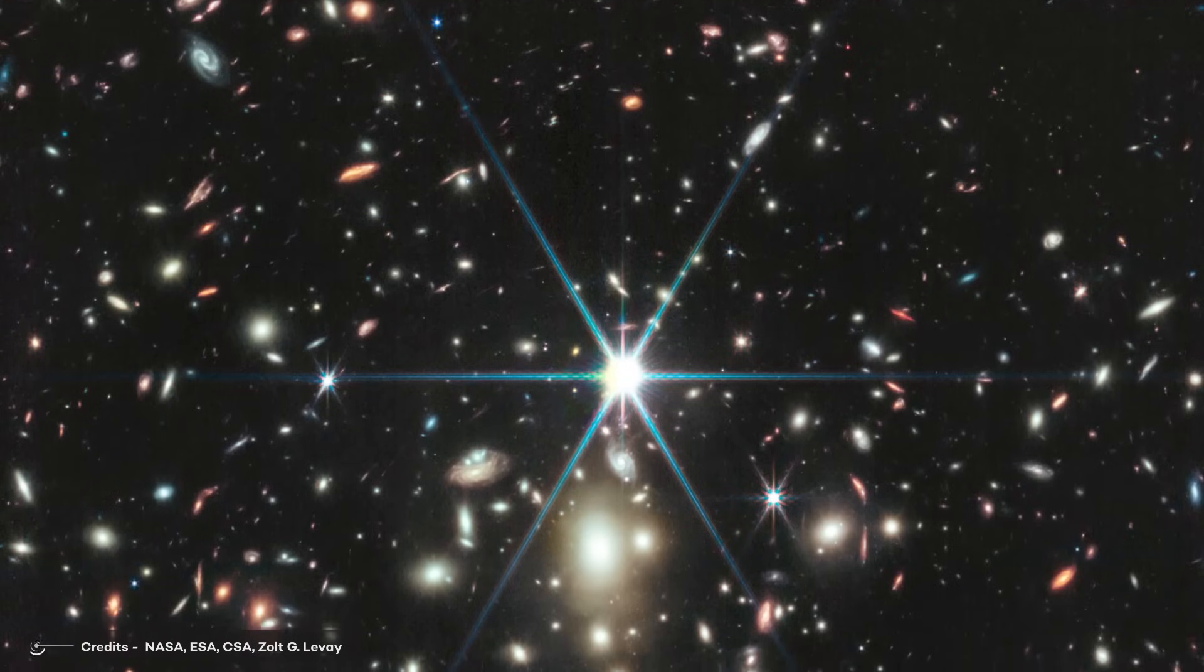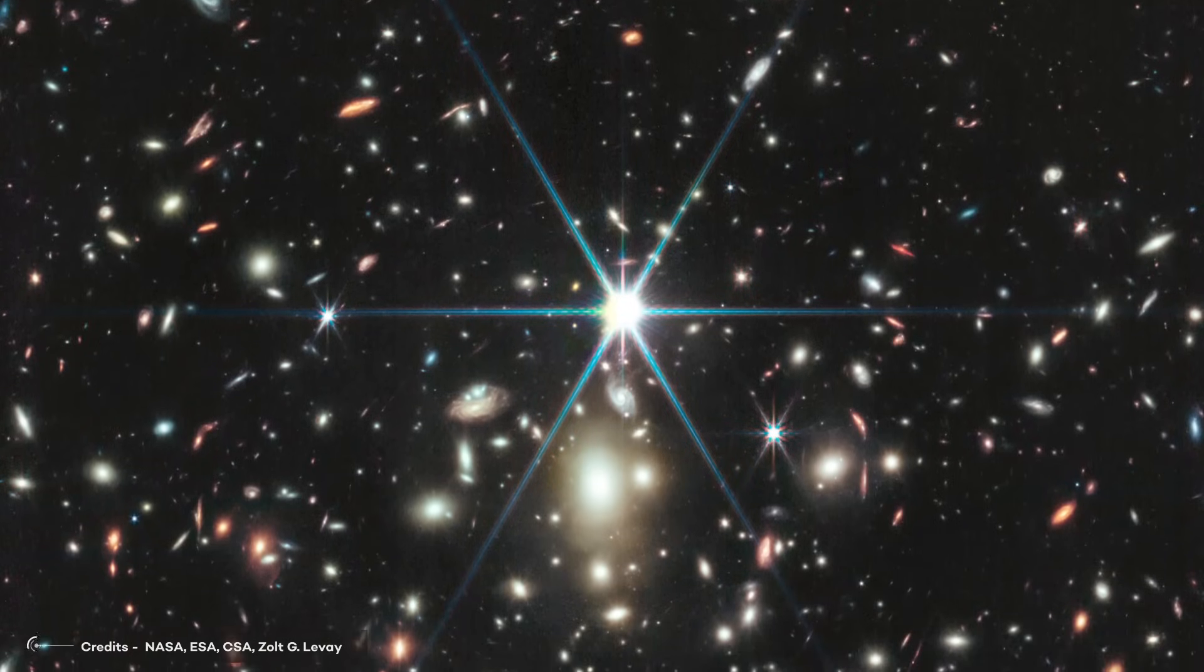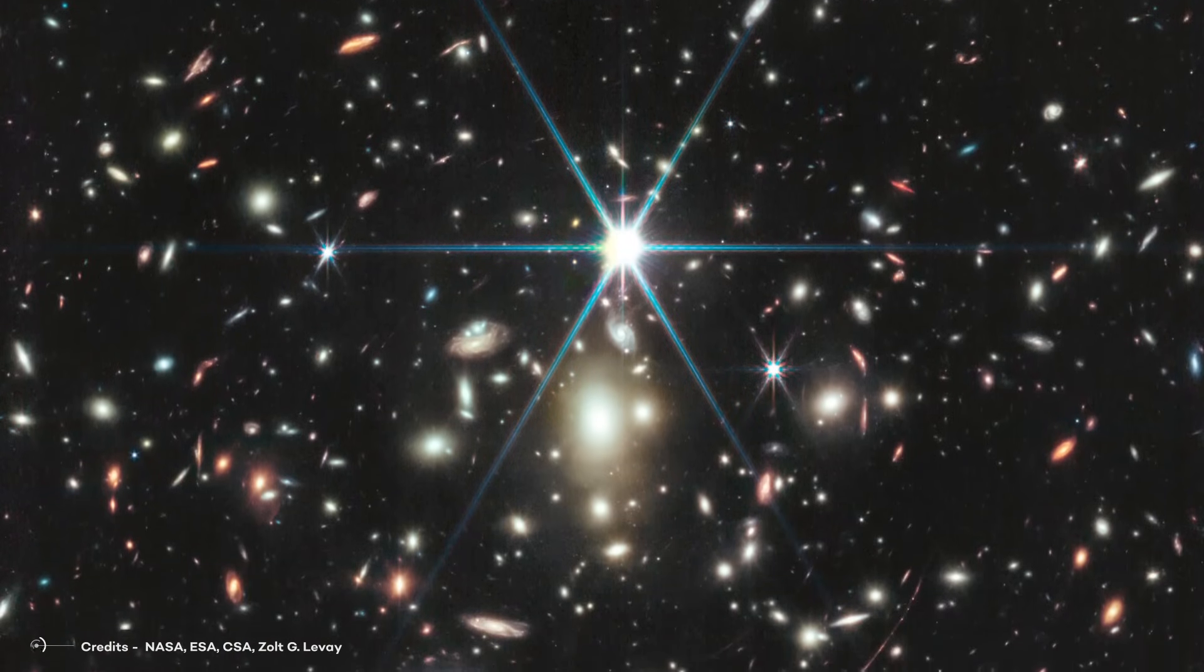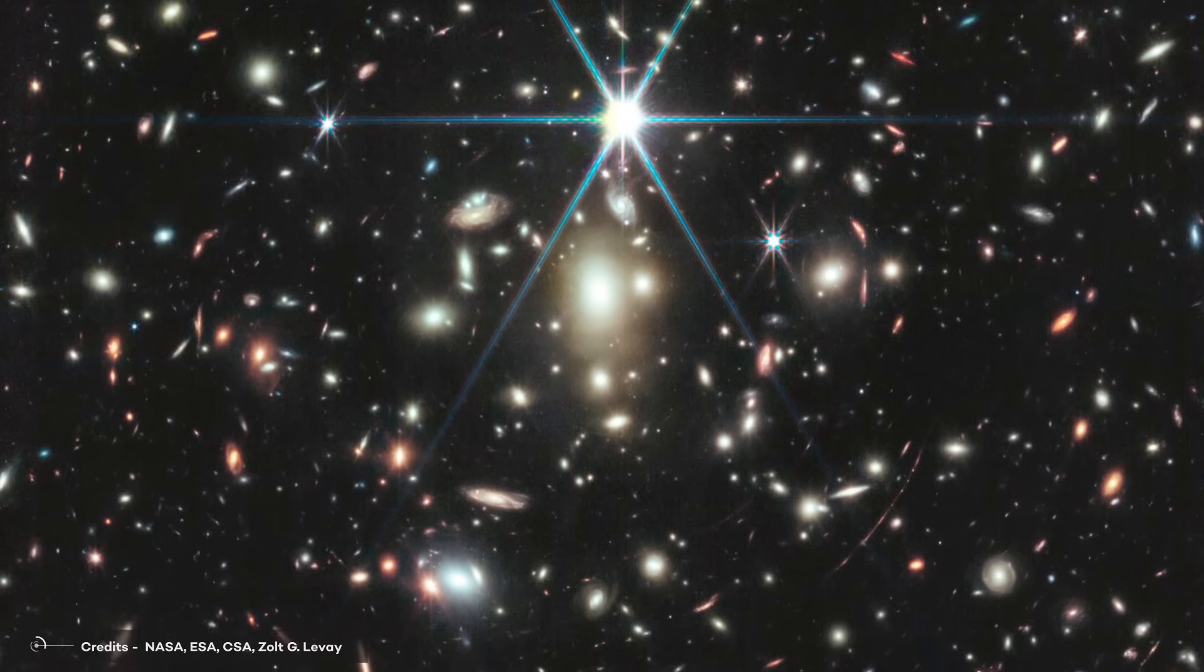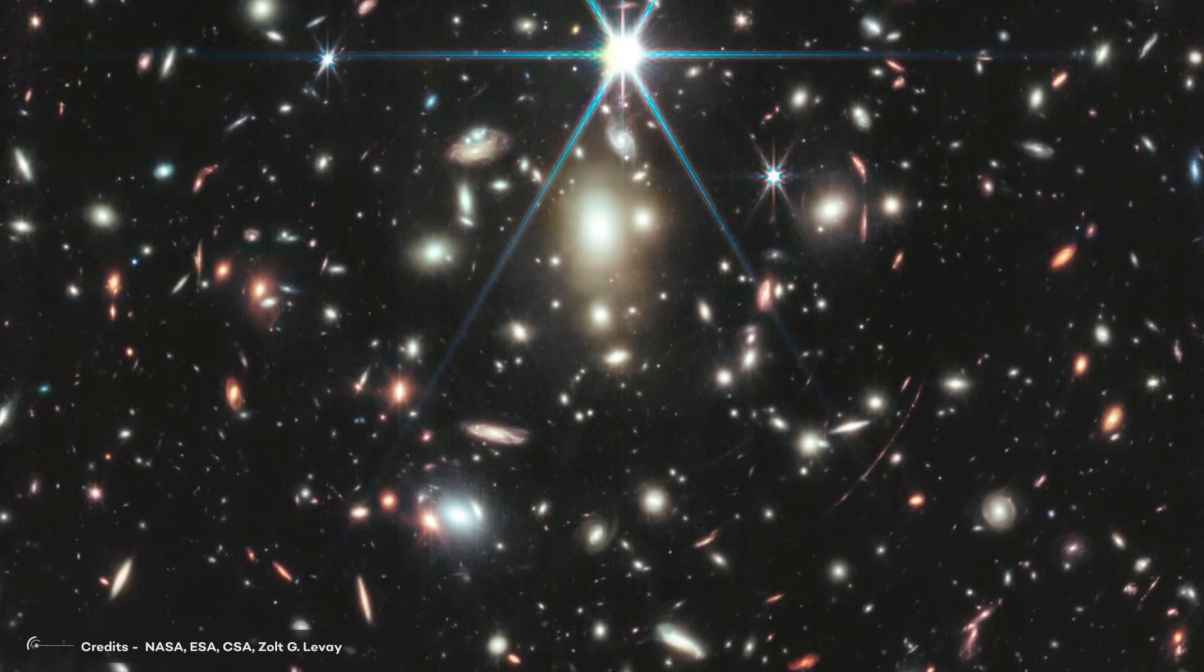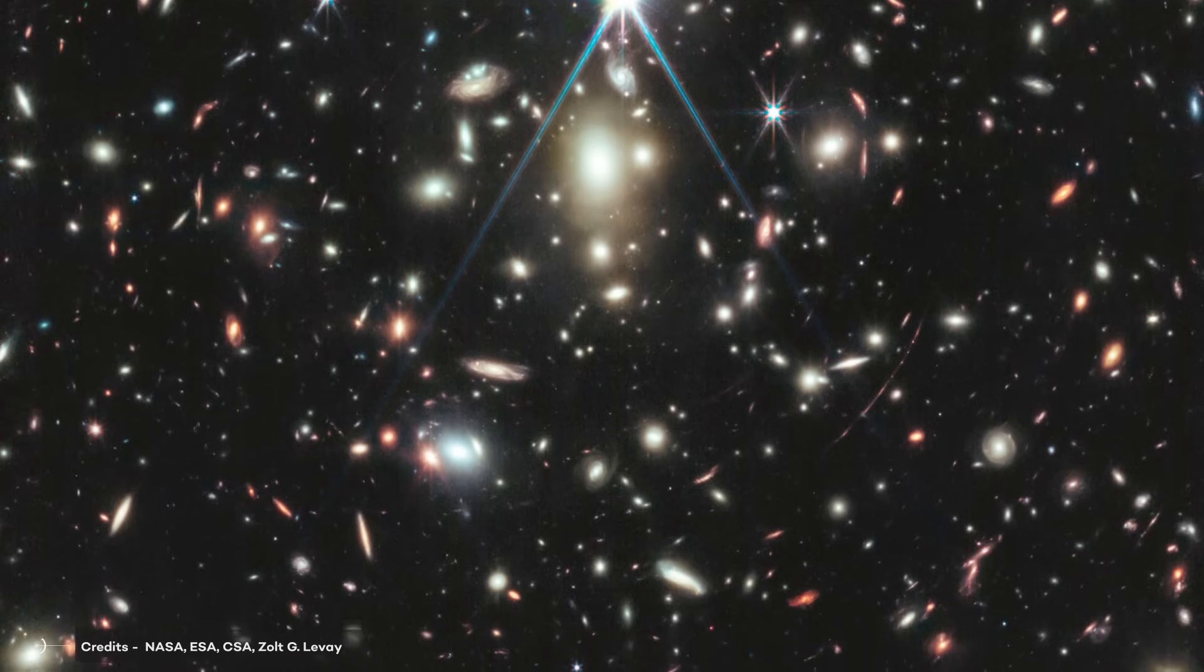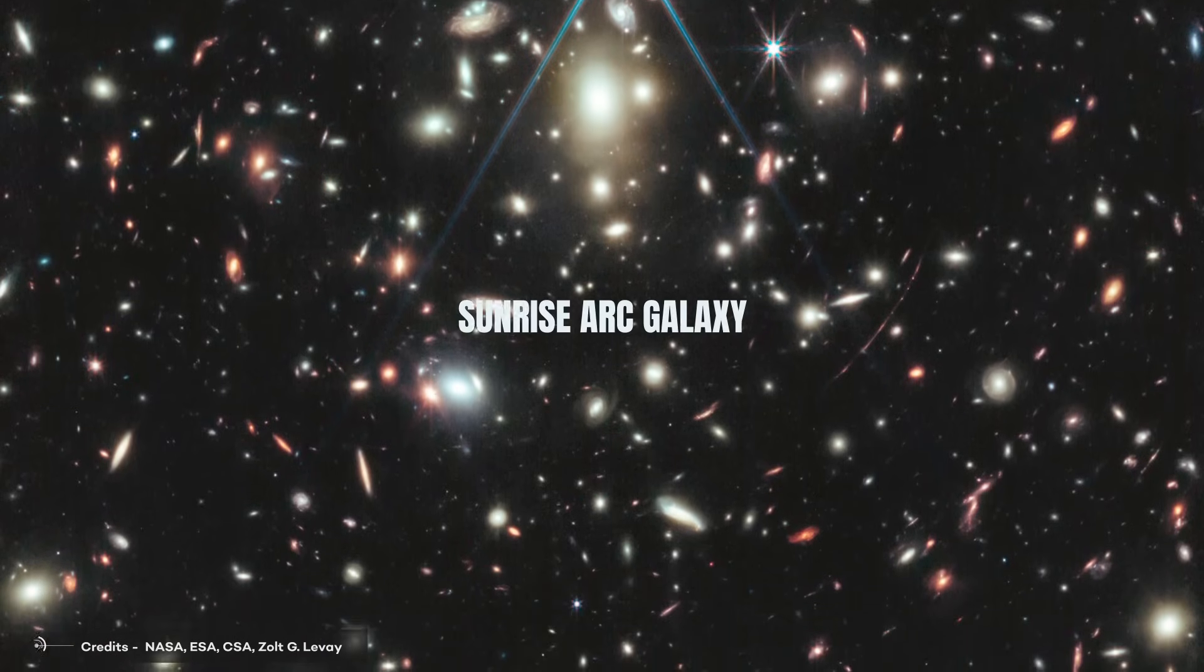As demonstrated earlier, each object in this image, except for the hexagonally spiked stars, represents an individual galaxy. Numerous galaxies grace this image, and Earendel is no exception. Like every other star, it resides within a galaxy known as the Sunrise Arc Galaxy.